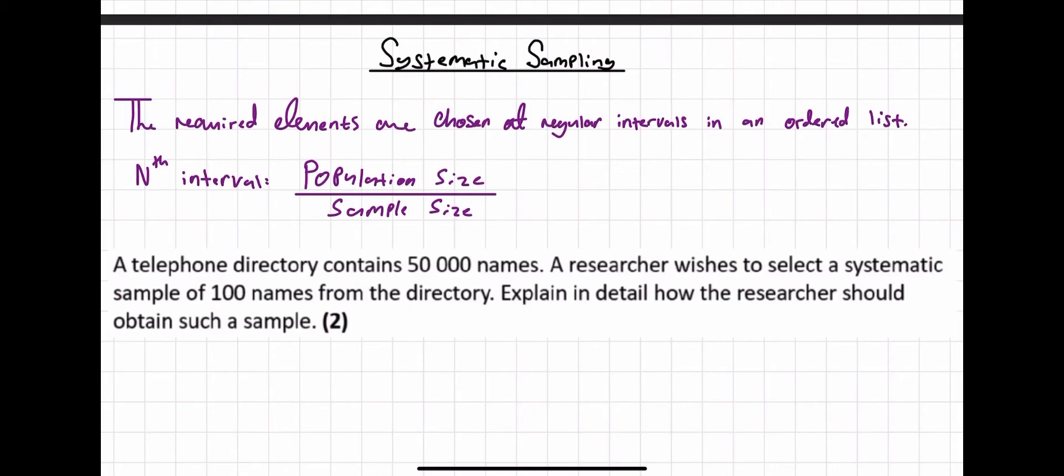To find the regular interval you would take your population size and divide it by sample size. What I mean by regular interval is you may be taking every 10th element, every 15th element, every 100th element, and that is determined by this formula over here.